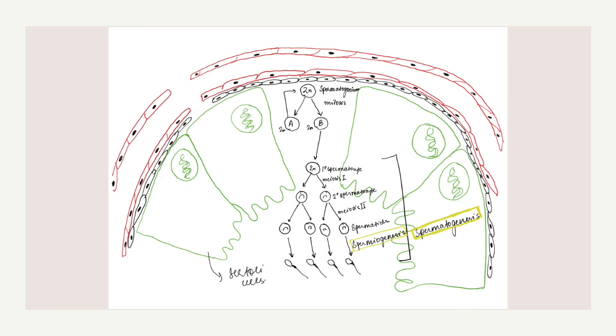Now let's talk about the blood testis barrier. Large molecules cannot pass from the blood into the lumen of a seminiferous tubule due to the presence of tight junctions between adjacent Sertoli cells.